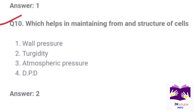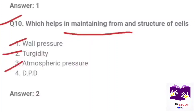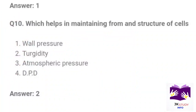Next question: Which helps in maintaining the form and structure of a cell? Option 1: wall pressure. Option 2: turgidity. Option 3: atmospheric pressure. Option 4: DPD. Correct option is Part 2: turgidity. Friends, neeche comment box mein comment karna — DPD ki full form kya hai?